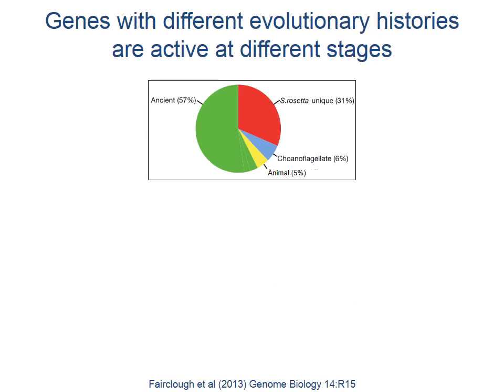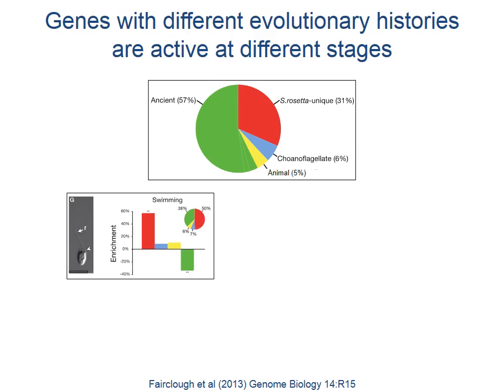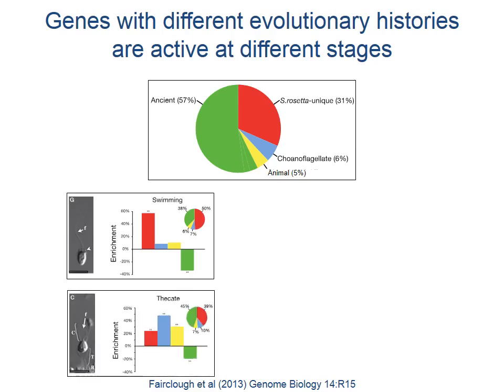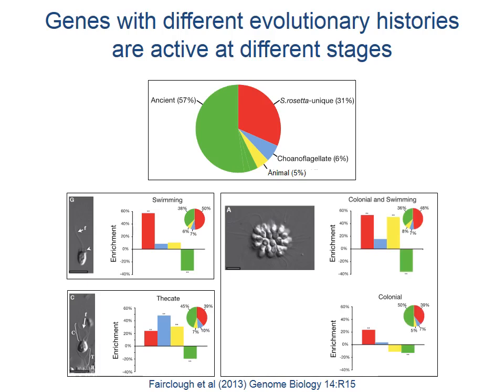Of Salpingoeca rosetta genes: the majority are ancient, evolving prior to the divergence of choanoflagellates, metazoans, and fungi; five percent are common with animals; six percent are common with other choanoflagellates; and 31 percent are unique to Salpingoeca rosetta. Examining how genes with different evolutionary histories are expressed during the life cycle, in the swimming stage more Salpingoeca rosetta-unique genes are expressed. In the thecate stage, more choanoflagellate-specific genes are deployed. In colonies and swimming cells from which colonies are derived, there is a greater enrichment of animal-like genes, suggesting these animal genes may play a similar role in multicellularity.